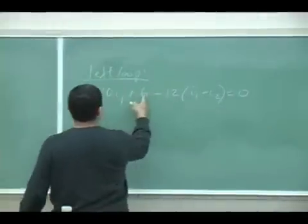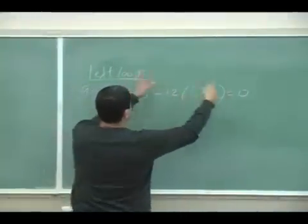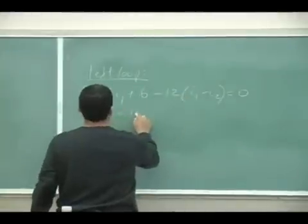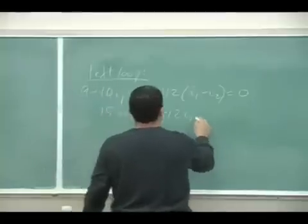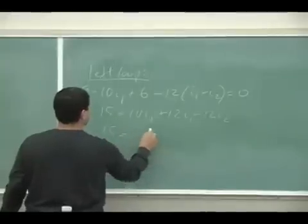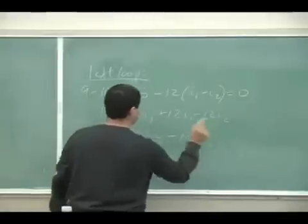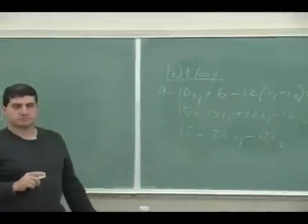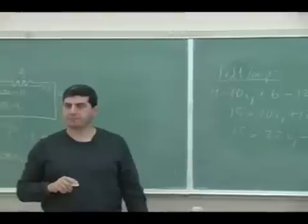Times I1 minus I2 is equal to zero. And then you put all these together, you get 15 equals, and then take this one to the other side, 10 I1 plus 12 I1 minus 12 I2. So 15 equals 22 I1 minus 12 I2.